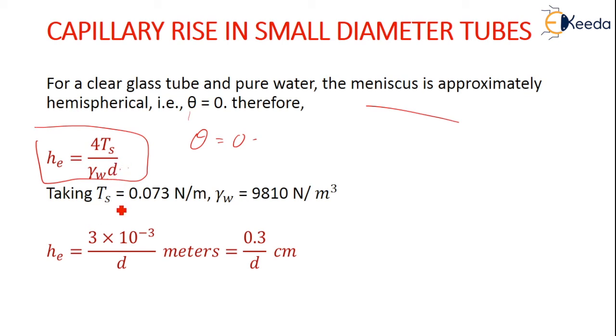So taking T_s equals 0.073 Newton per meter, this is a regular value for surface tension, and γ_w 9810 Newton per meter cube. After substitution we get h_c equals 0.3 by d, this is in centimeters. Thank you.